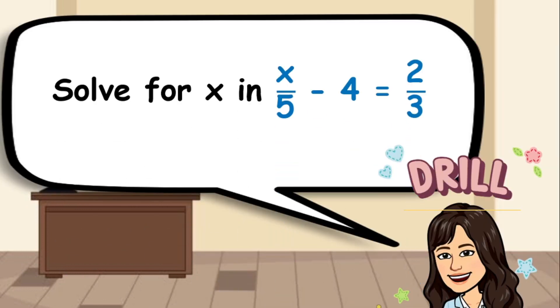For your third drill, solve for x in x over 5 minus 4 equals two thirds.